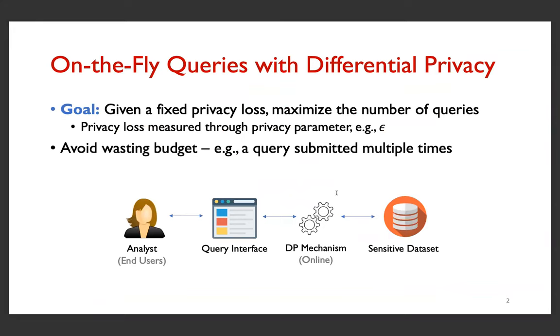The problem we are looking at is answering queries on a sensitive dataset through a differentially private mechanism. The goal is to maximize the number of queries that can be answered under a fixed global privacy loss, and the idea is to avoid wasting the privacy budget. A simple example of that would be to avoid answering the same query multiple times with different noise.